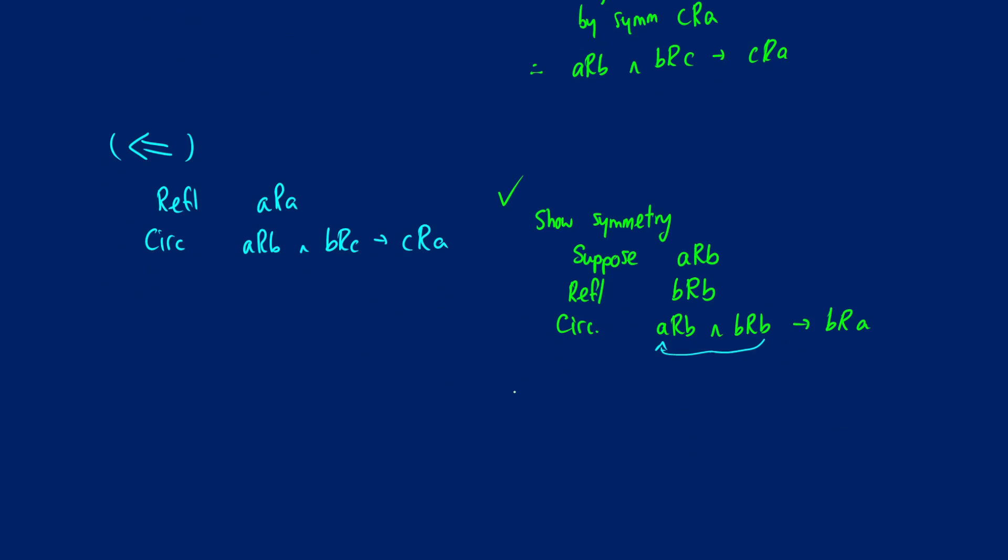Now we need to show transitivity. And what I'll do in this case is we're going to use the fact that we just proved symmetry to make this really trivial. So we know based on circularity, that if we have aRb, and we have bRc, then we're going to get cRa.